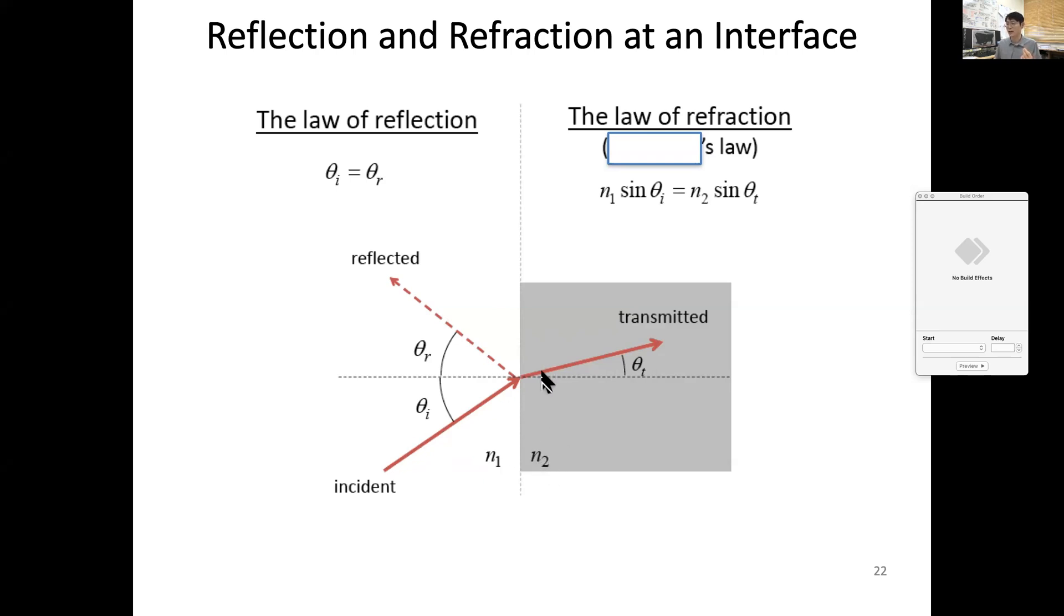That relationship can be easily computed by calculating the speed of light change with respect to different refractive index, and that turns out to be n times sine theta has to be conserved. This is the famous law of refraction, and you already heard this is the so-called Snell's law. What this means is the wave tends to bend toward the higher refractive index.